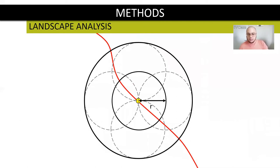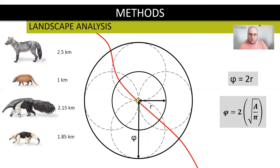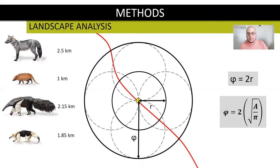So you need to consider a greater radius around the point, what we call here phi, that is the double of the radius of the home range approximated for a circle. For each species, we have a different home range and a different phi value.